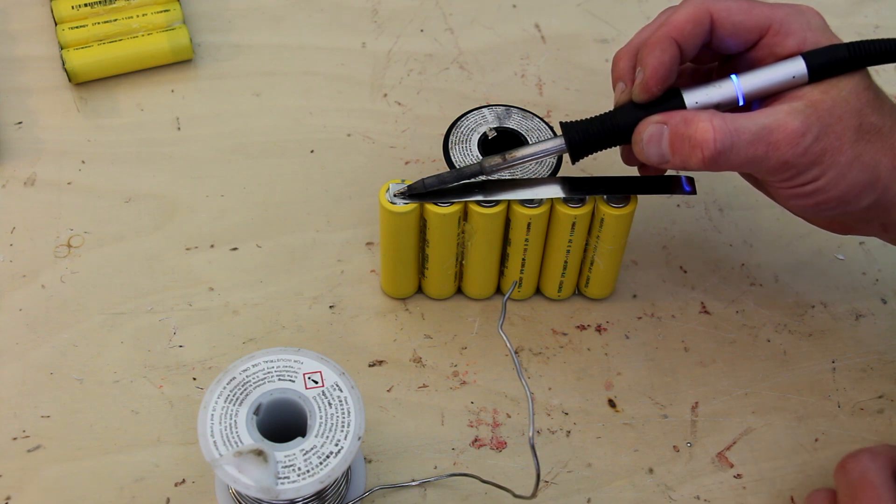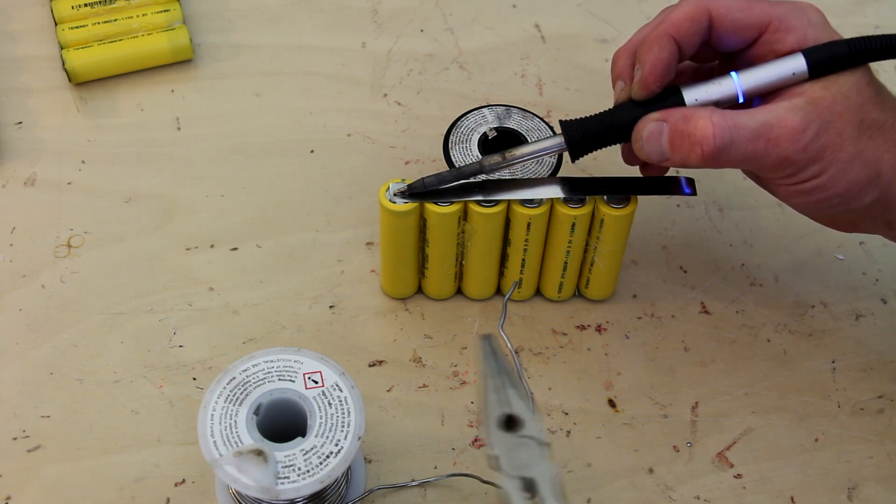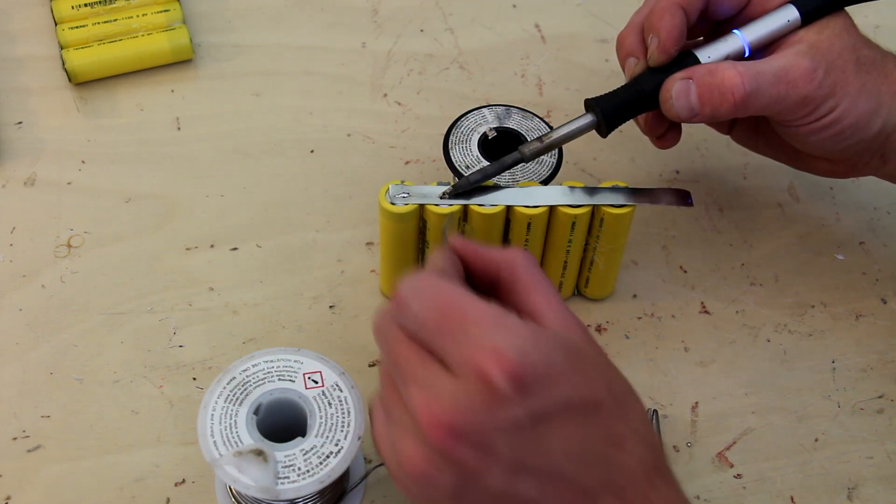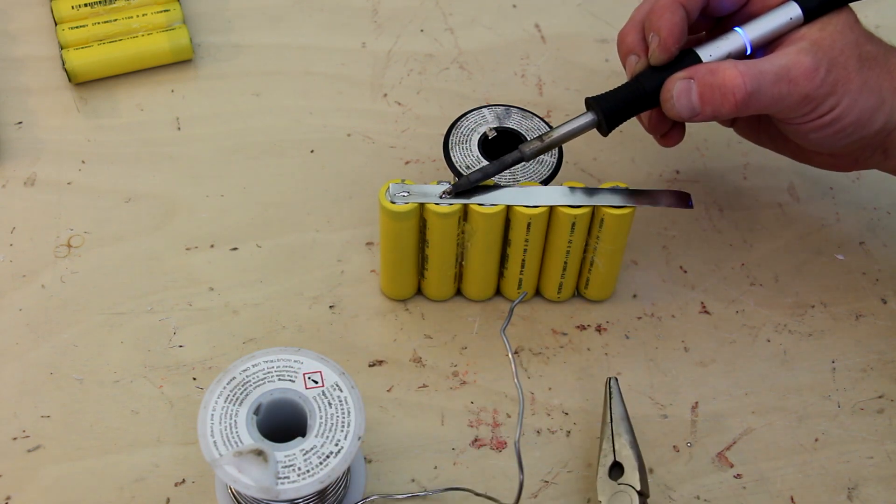You'll notice here that there's a bit of nickel strip hanging off the end. The reason for this is this is going to be my negative lead, so I need a little bit of nickel strip hanging off the end to connect my wire to.